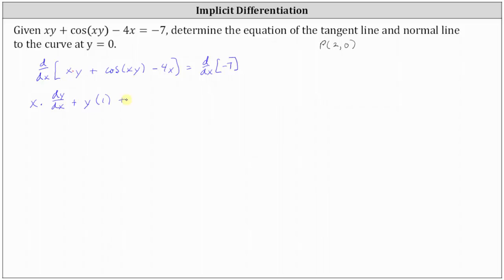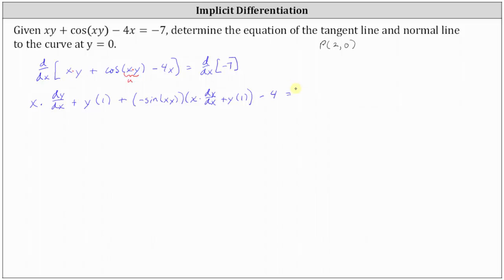To differentiate cosine of xy with respect to x, we apply the chain rule where the inner function u is xy. To find u prime, we also apply the product rule again, where the first function is x and the second function is y. The derivative of cosine u with respect to x is negative sine u times u prime — in our case, negative sine of xy — times the derivative of xy with respect to x, which is x times dy/dx plus y times one. Then we have minus the derivative of four x with respect to x, which is four, equals the derivative of negative seven with respect to x, which is zero.